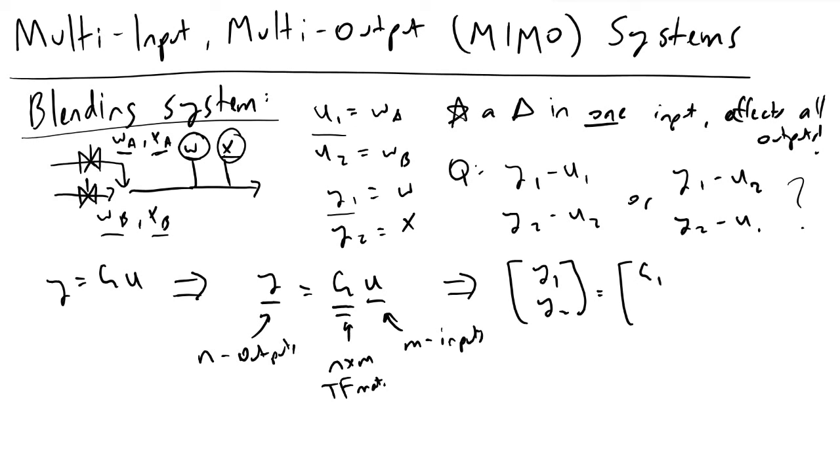What g11 tells us is how a change in input 1 maps onto y1. What g12 tells us is how a change in input 2 maps onto y1. This is the notation that we will go with.